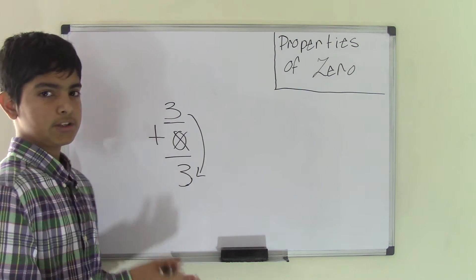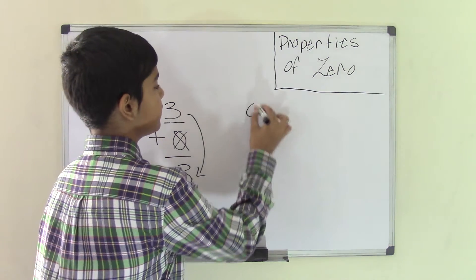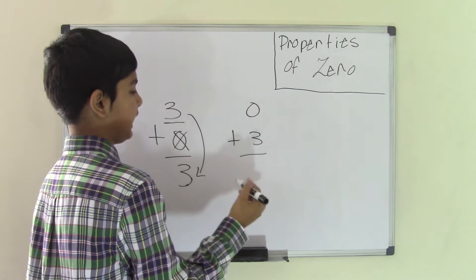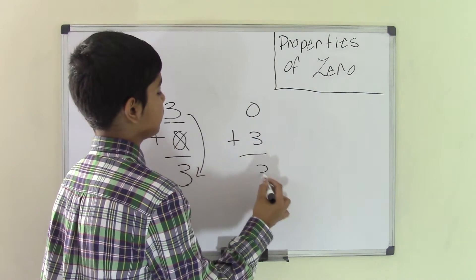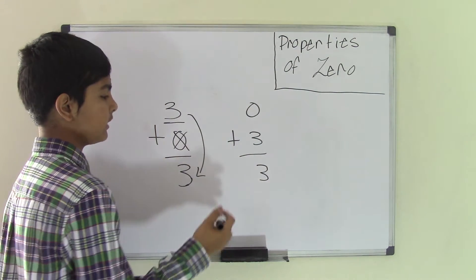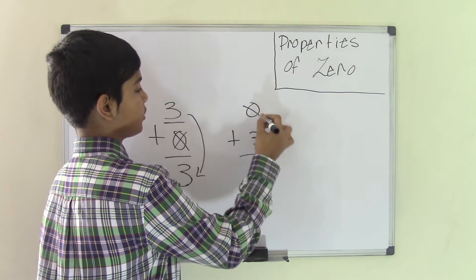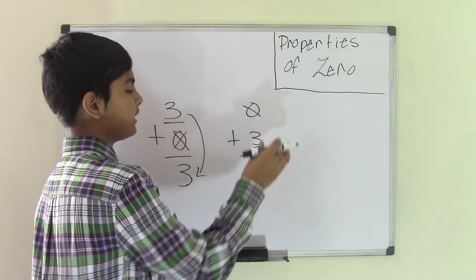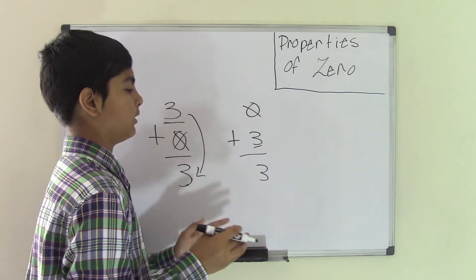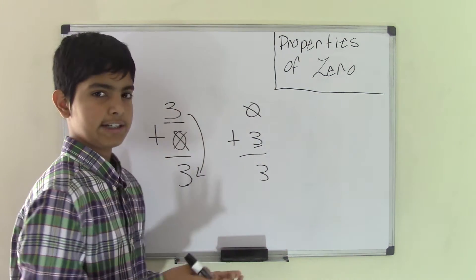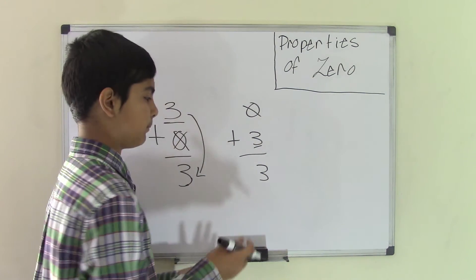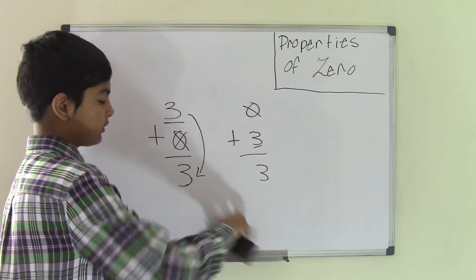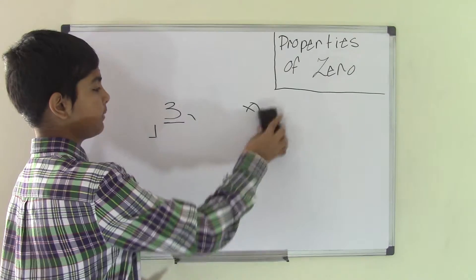Now you can also flip this over. So we could say zero plus three, and the sum is going to be three itself. Because remember, zero holds no value and three does hold a value. So you're going to get the same number as the sum — three is going to be the sum itself. So that's that for adding by zero.